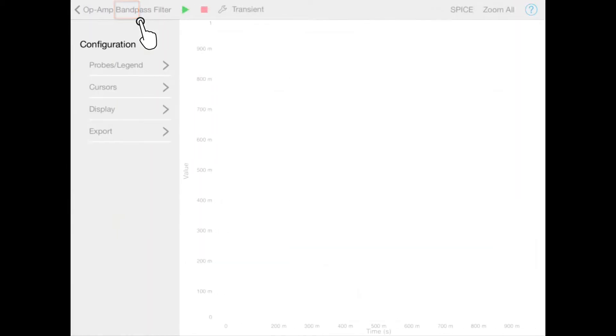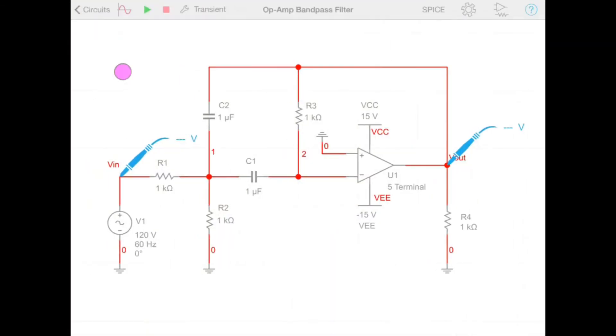Next, we have the graph button, and opening that up will show us our simulation results in a graphical format. Tap back to return to the schematic.